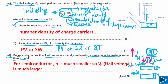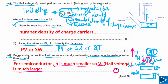To write the answer: for semiconductor, N is much smaller, so VH is much larger. If you write down this one point, you will get one mark.